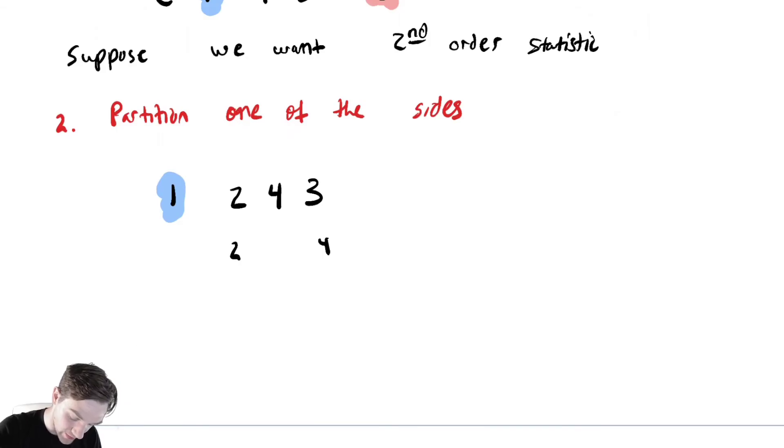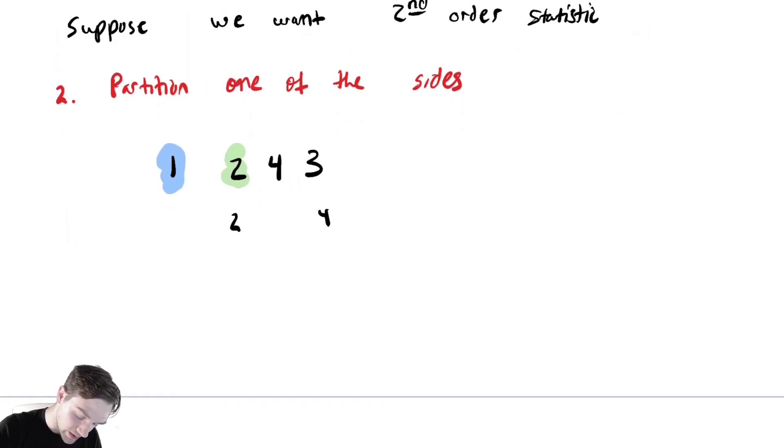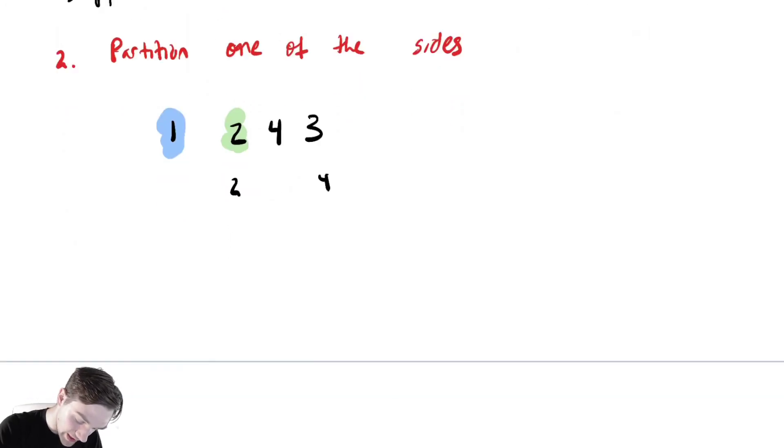Let's say now we partitioned around two. If we do that, we would have a partition of two, four, three, and two is our pivot. And two's position in sorted order is position two. Therefore, the element two of that original array was the second order statistic. So the second order statistic is two.